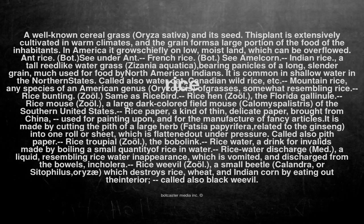Ant Rice. Bot., see under ant. French rice. Bot., see amelkorn. Indian rice: a tall reed-like water grass, Zazania aquatica, bearing panicles of a long, slender grain, much used for food by North American Indians. It is common in shallow water in the northern states.